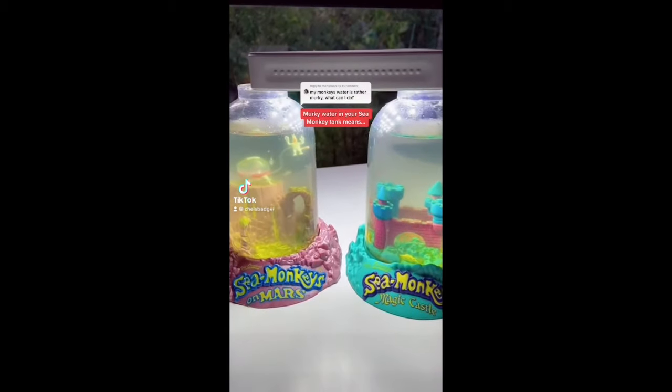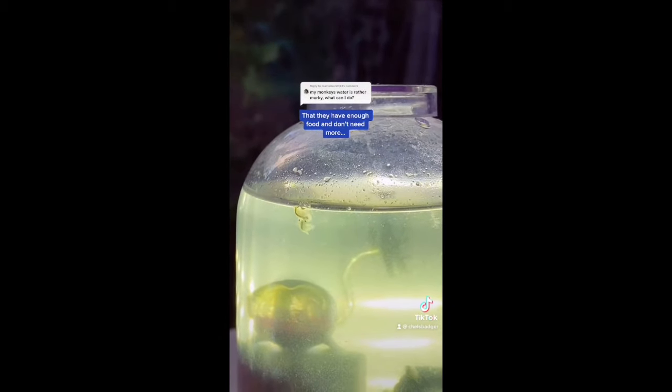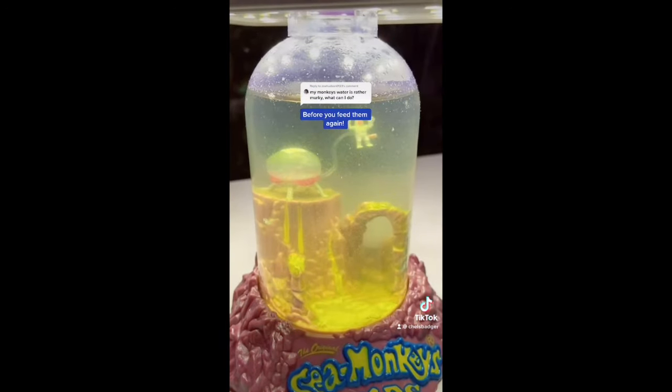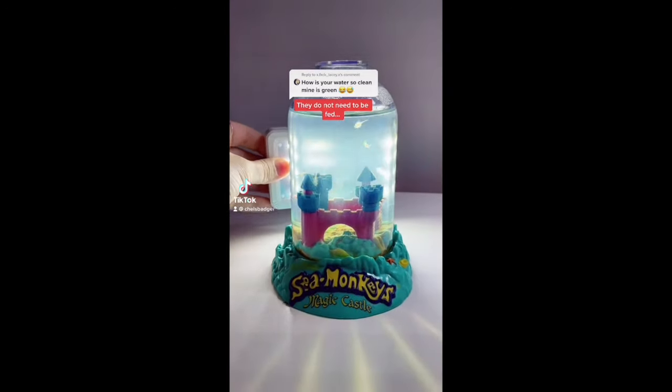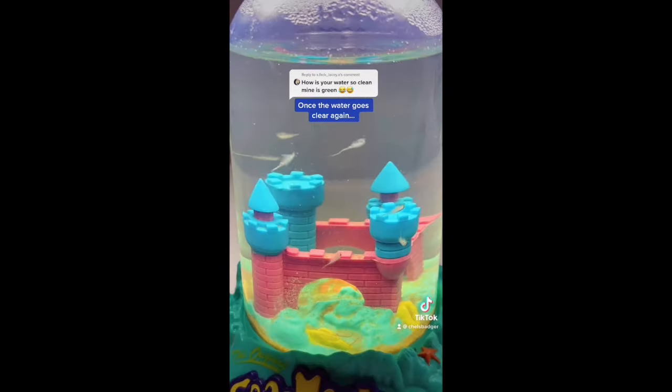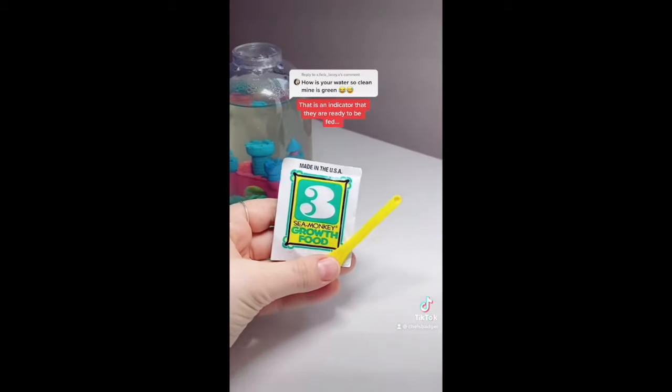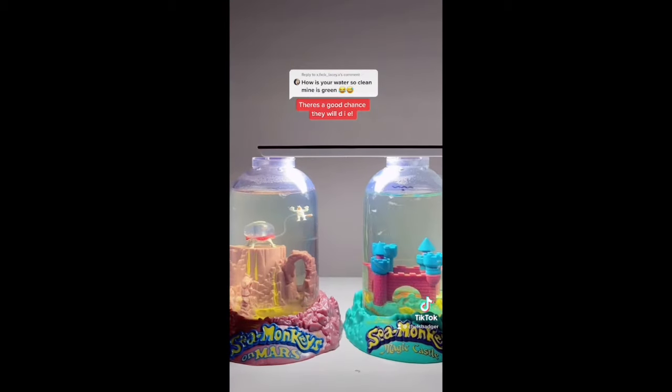Murky water in your sea monkey tank means that they have enough food and don't need more. So if the water is still murky 7 days after you've fed them, make sure you wait until the water becomes clear before you feed them again. Green or murky water in your sea monkey tank means that they have enough food and that they don't need to be fed. Once the water goes clear again that is an indicator that they're ready to be fed. If you feed them while the water is murky there's a good chance they'll die.